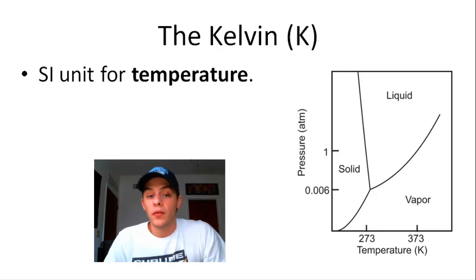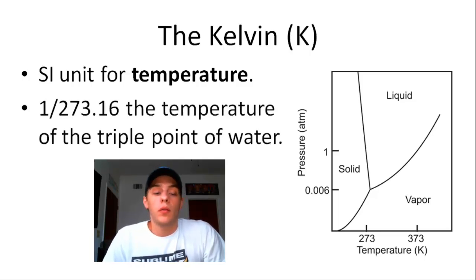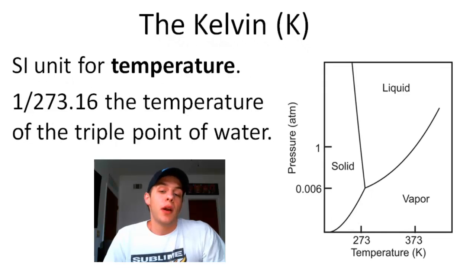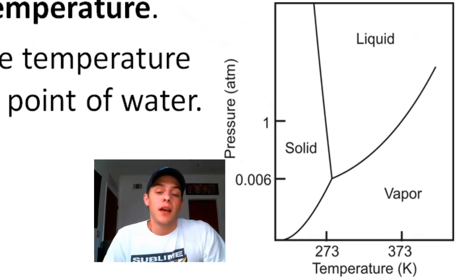And the definition of the Kelvin is 1 out of 273.16 the temperature of the triple point of water. So what the heck is the triple point of water? Well, here on the right side of your screen I have what's called a phase diagram for water.